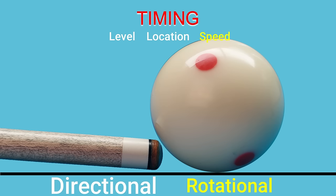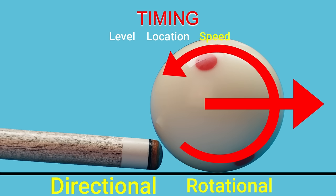With a draw shot, it is the rotational energy that causes the cue ball to come back after contact with the object ball. Though an object ball is not required, the cue ball will come back whenever the rotational energy causes enough friction with the cloth to overcome its directional energy. Here's an example.